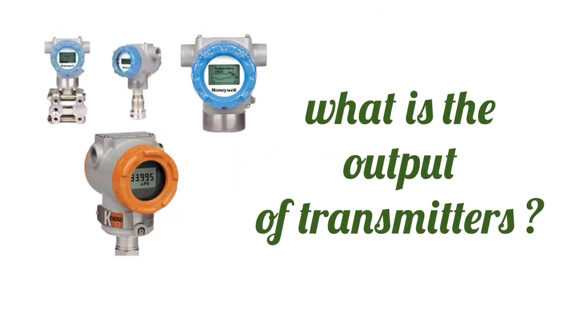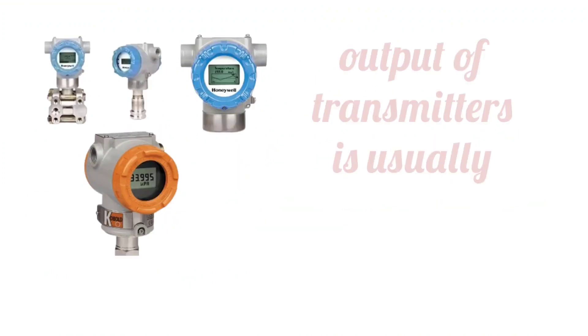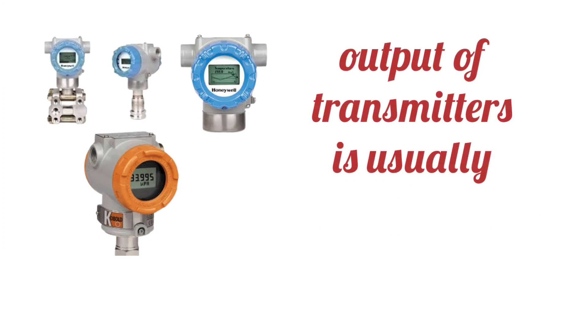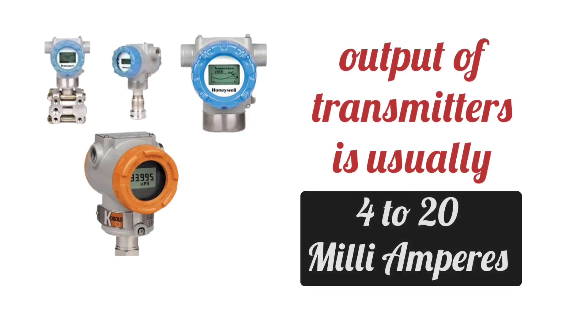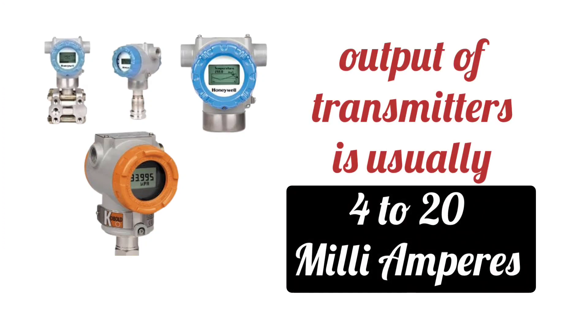What is the output of transmitters? The output of transmitters is usually 4 to 20 mA.